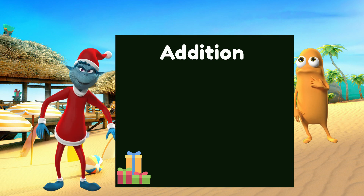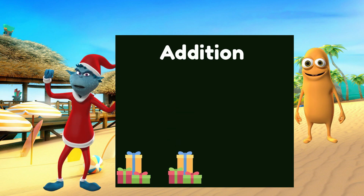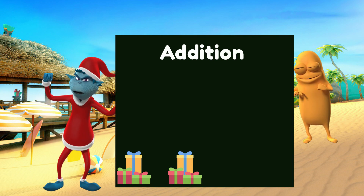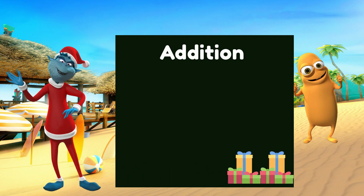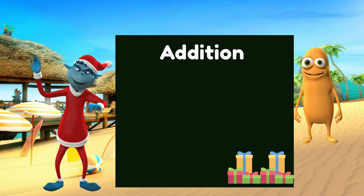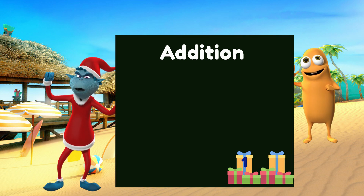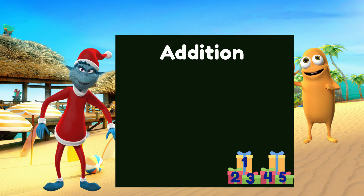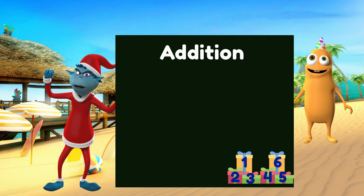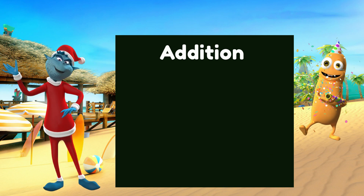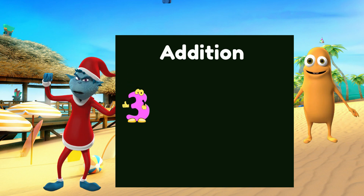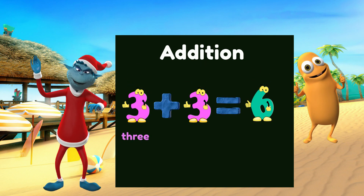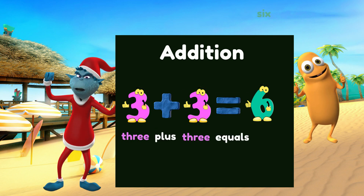Now let's try another example. Let's say Mascot has three gifts and then I decided to give him another three gifts. How many gifts will Mascot have in all? Combining three gifts with three more gifts and counting them all, we get one, two, three, four, five, six. Mascot now has six gifts. Writing it down: three plus three equals six.